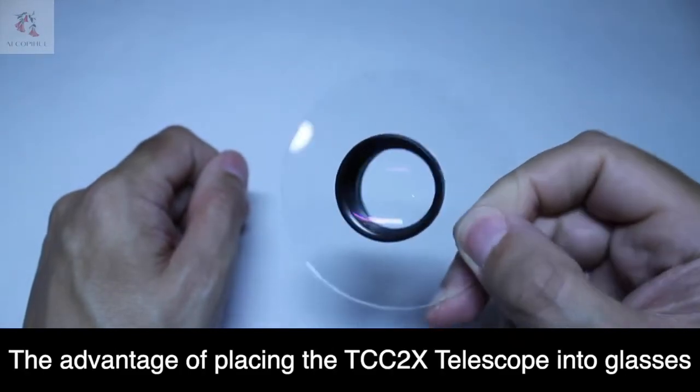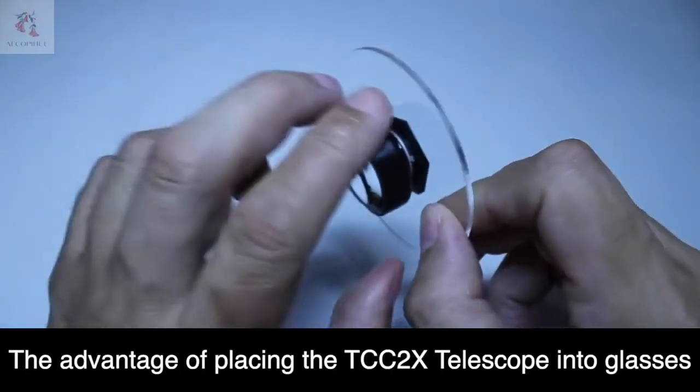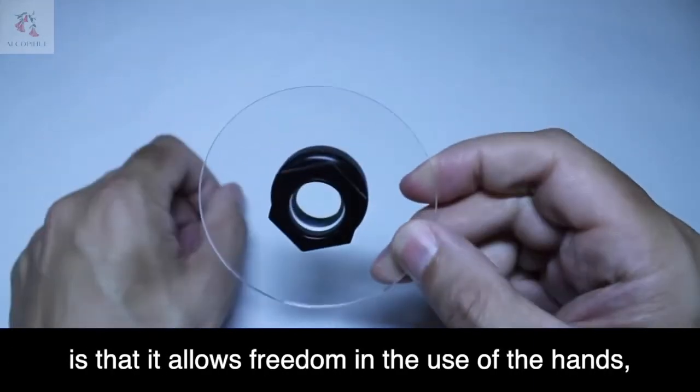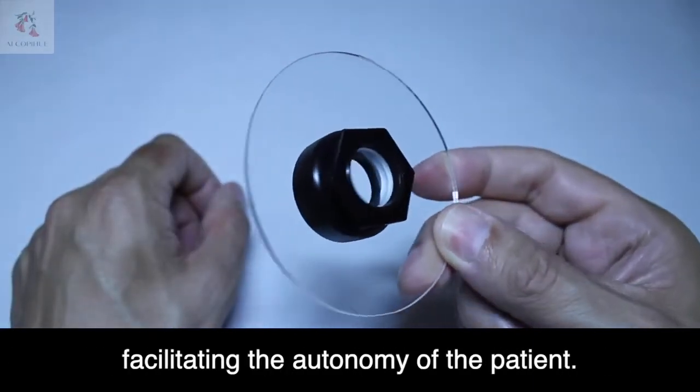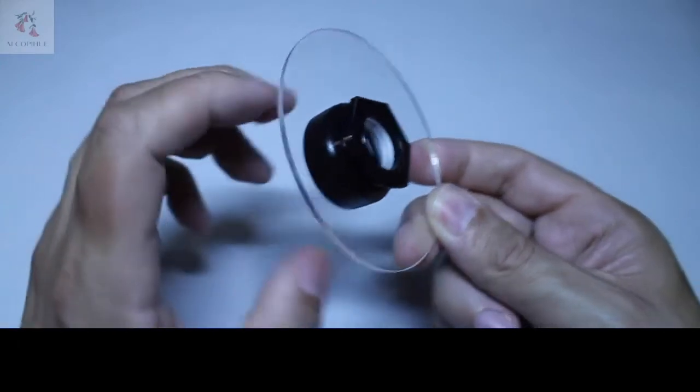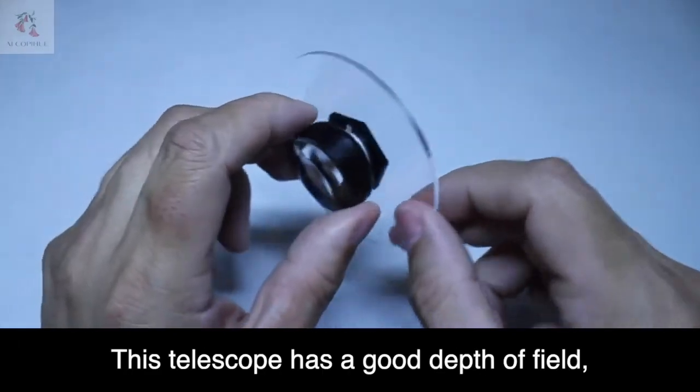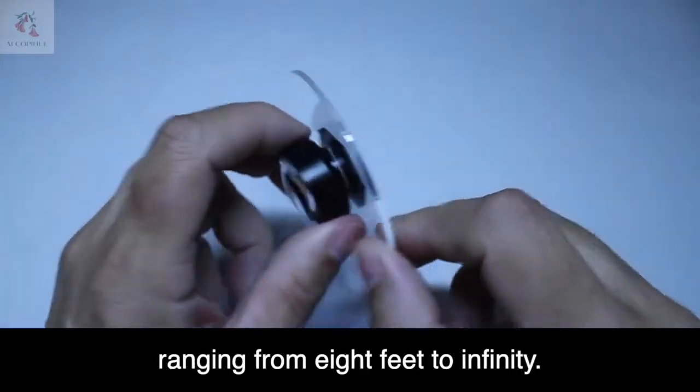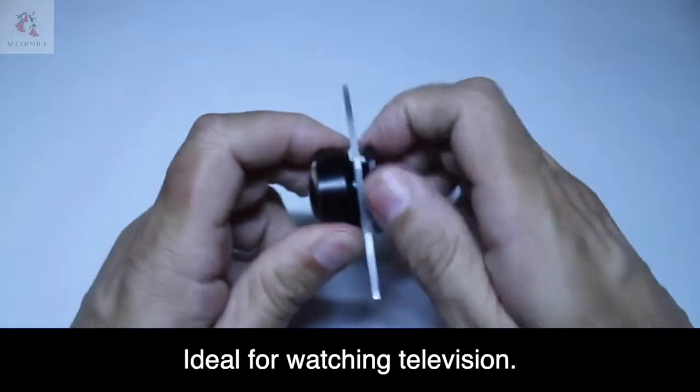The advantage of placing the TCC-2X Telescope into glasses is that it allows freedom in the use of the hands, facilitating the autonomy of the patient. This telescope has a good depth of field, ranging from 8 feet to infinity, ideal for watching television.